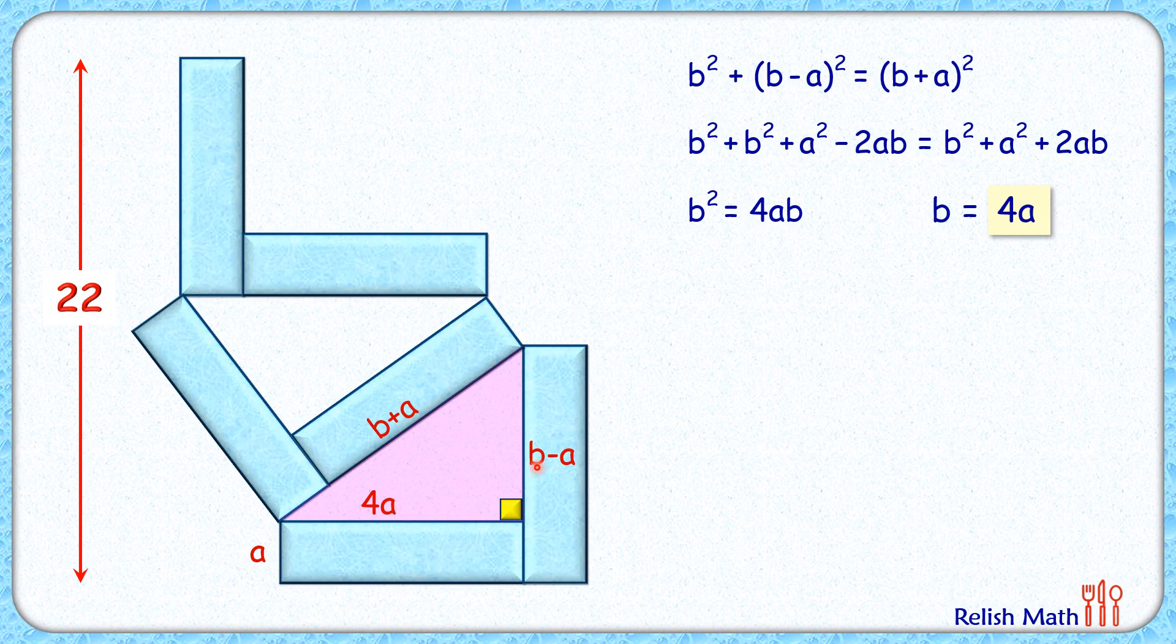Here this will be 4a minus a, or height of this triangle will be 3a, and this hypotenuse will be 4a plus a or 5a. Now here if we extend this width downward and this line on the left, we'll get this right angle triangle formed with hypotenuse as a centimeters.